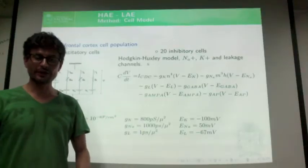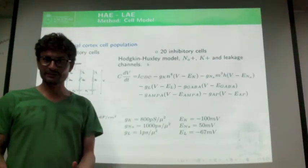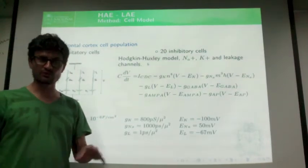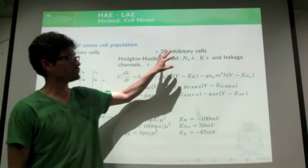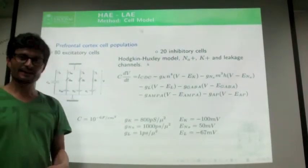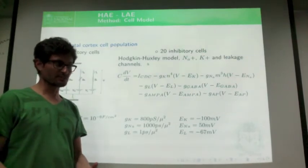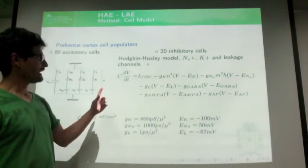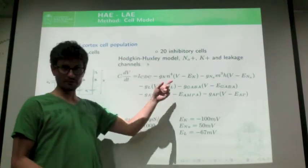Now I am going to talk about the method. Professor Abella designed a network with 100 neurons: 80 excitatory neurons and 20 inhibitory neurons. Each neuron is modeled to generate action potentials. For this, Professor Abella used the Hodgkin-Huxley model.